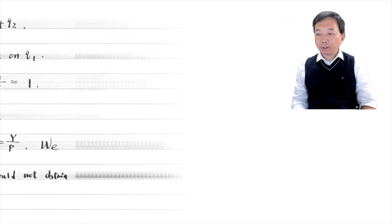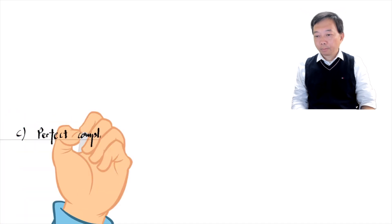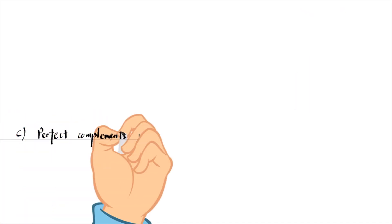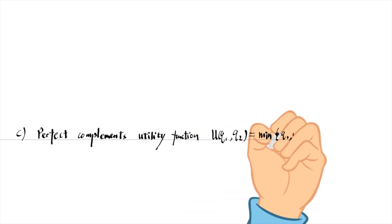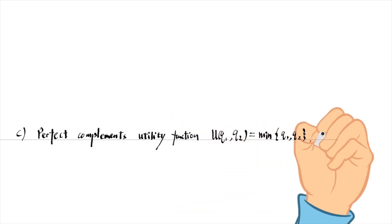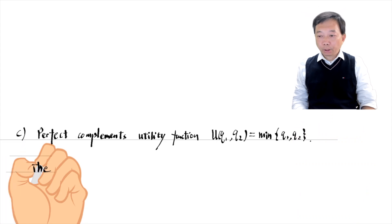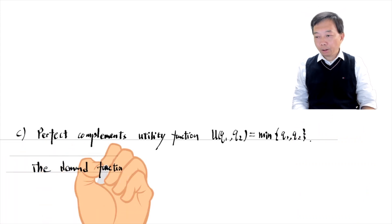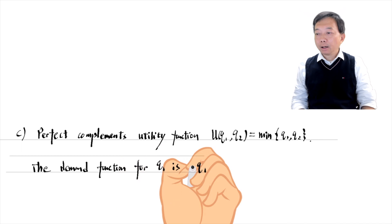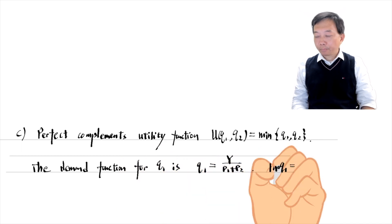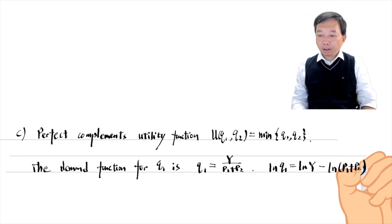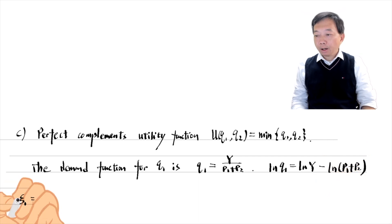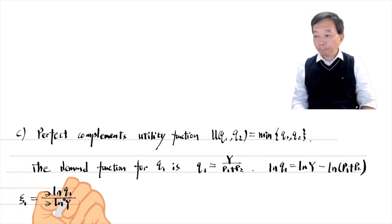For the perfect complement utility function, the demand function for Q1 is Q1 equals Y divided by P1 plus P2. Using the same method, we have the income elasticity of demand equal to 1 for both goods.